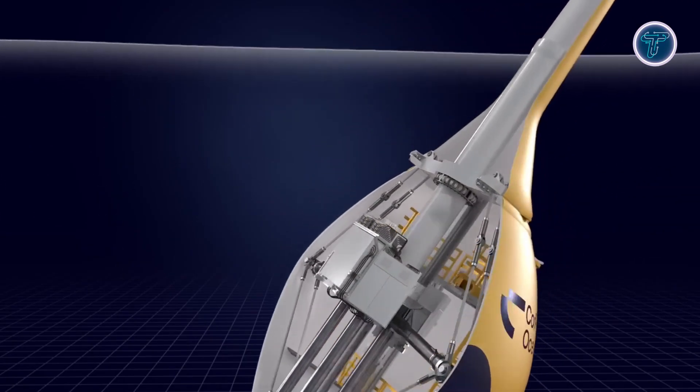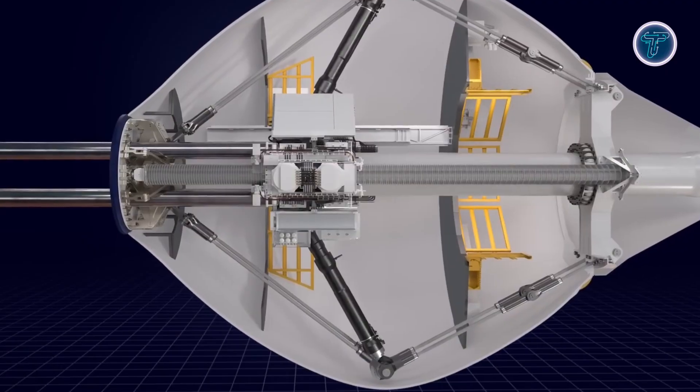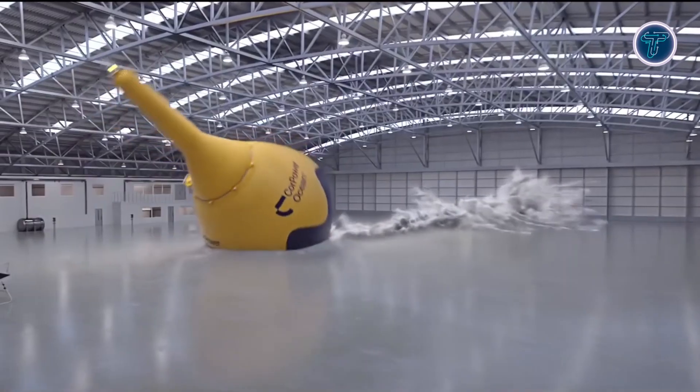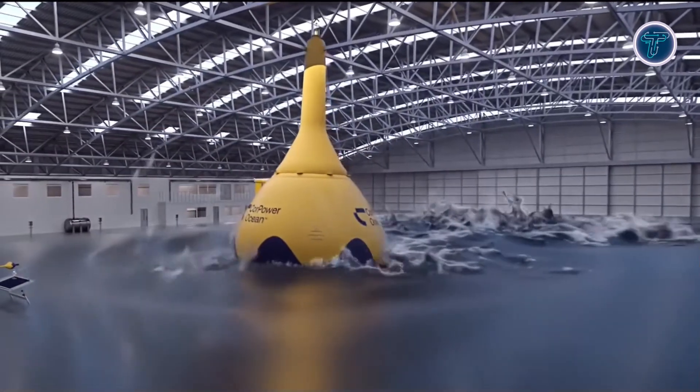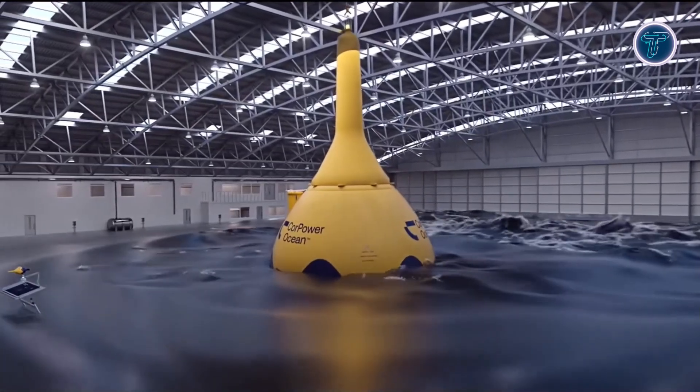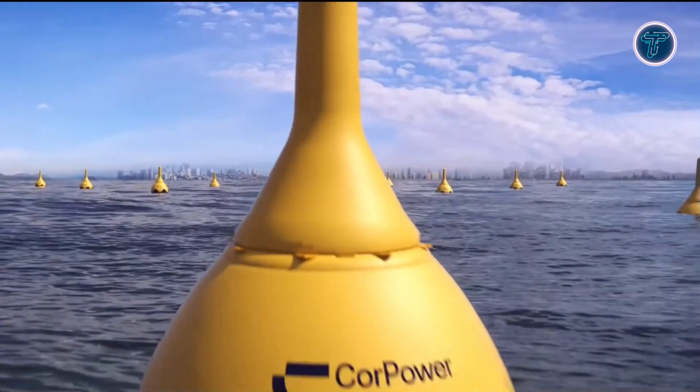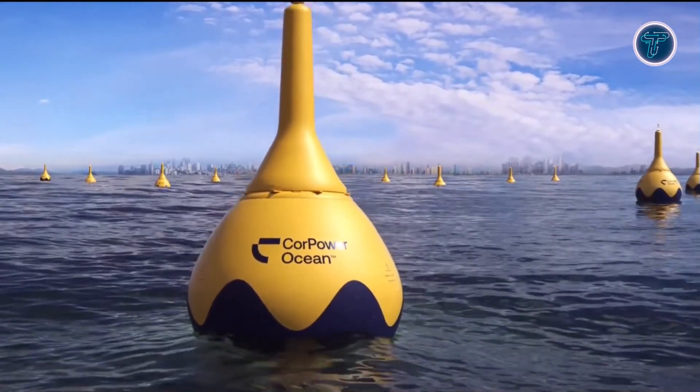Energy from the buoy's motion is transferred through a cascade gearbox to a generator, creating reliable power with minimal environmental impact. Anchored securely to the seabed, the C4 has been rigorously tested on land and at sea, and is already connected to Portugal's grid, operating autonomously to adapt to changing conditions. With plans to deploy multiple units in modular core packs, this technology shows how wave energy could become a scalable, sustainable source of electricity, harnessing the vast power of the oceans.